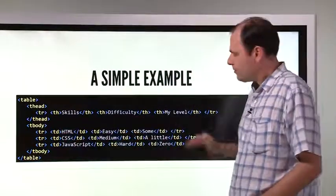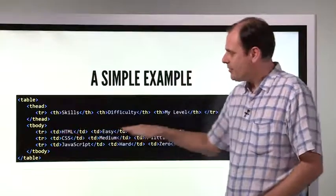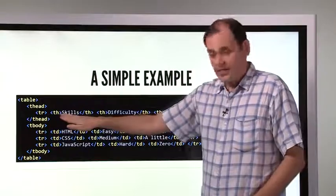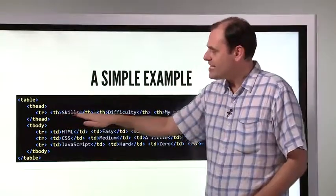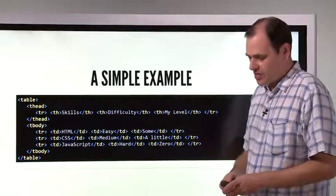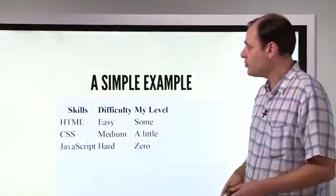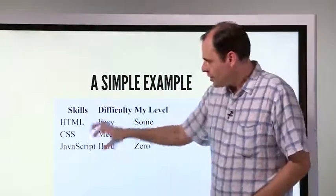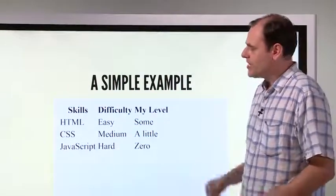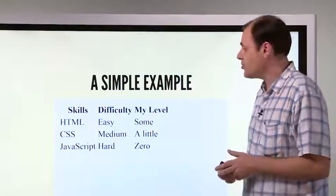Like we said, TR for each single row. TD for each box, except in the header where we use TH. What's the visual result of this example? This. There we are, nice table. Column one, column two, column three. It's done exactly what we asked it to do.